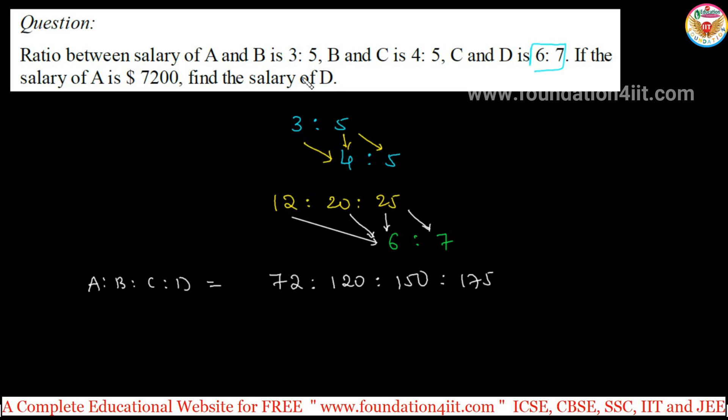Find the salary of D if A is getting 7,200. So we should take only A and D. The method is directly A by D equals 72 by 175, because A value is 72 ratio, D is 175. A is given 7,200, just to take 7,200 by D equals 72 by 175.